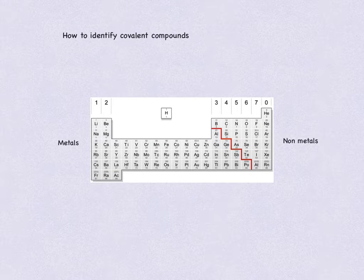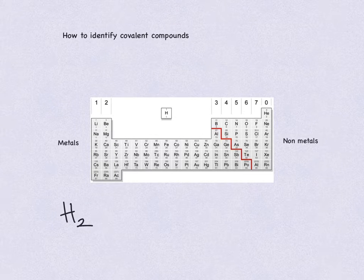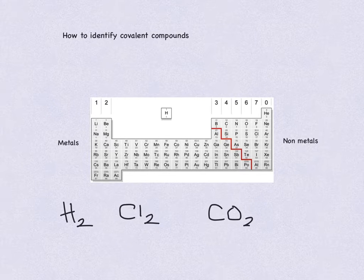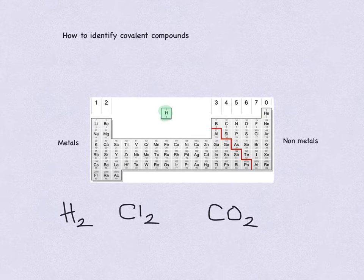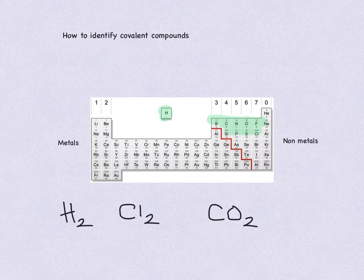How do we identify covalent compounds? Here we have hydrogen — H₂ is covalent. Chlorine, Cl₂, is covalent. And also CO₂, which is carbon dioxide — all of those are covalent compounds. If we look at our periodic table, we'll find hydrogen at the top, carbon here, and here is oxygen. All of our covalent compounds exist on the right hand side of our staircase, and are non-metals.